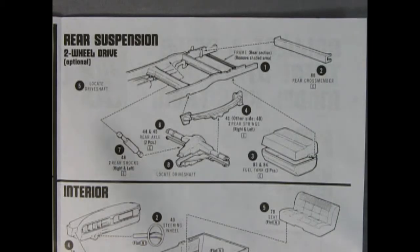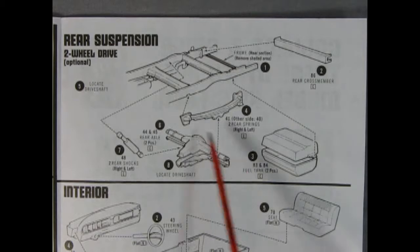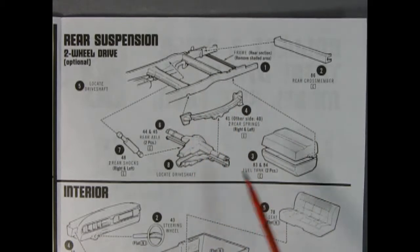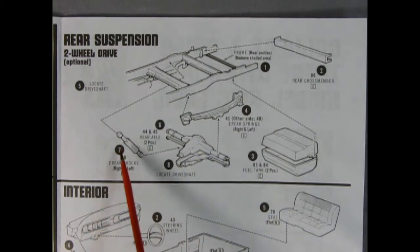Here's the rear suspension for our two-wheel drive option. You've got two leaf springs going in the back, a differential with an upper and lower half that you glue together to make one piece, two rear shocks, a rear cross member and a two-piece fuel tank.